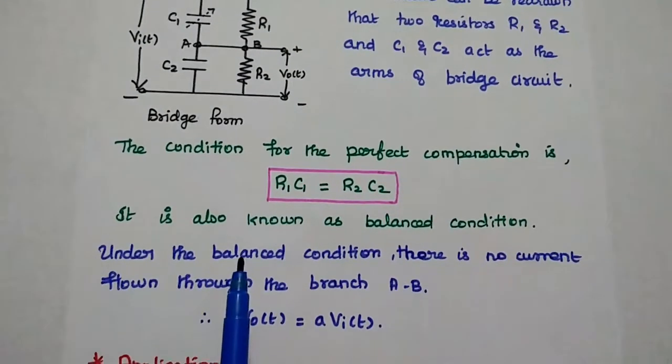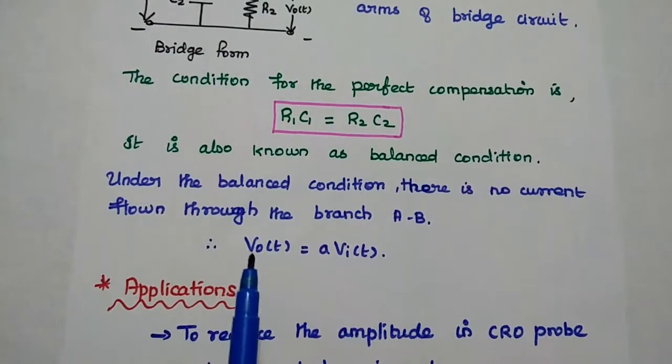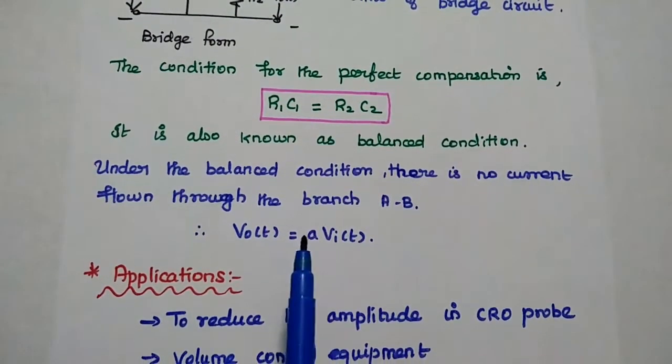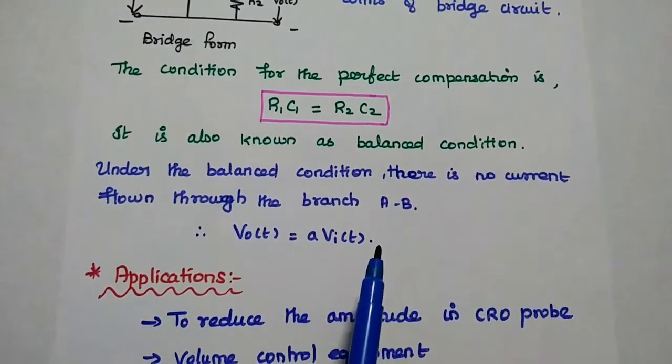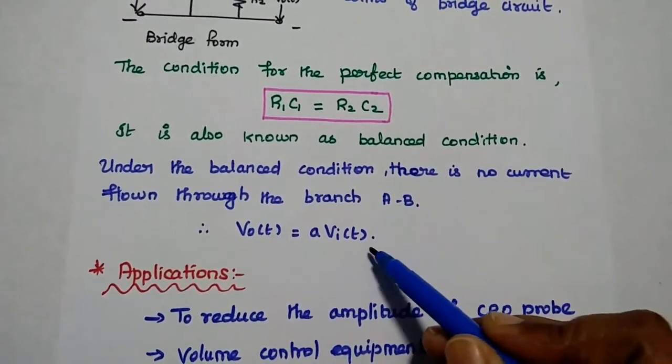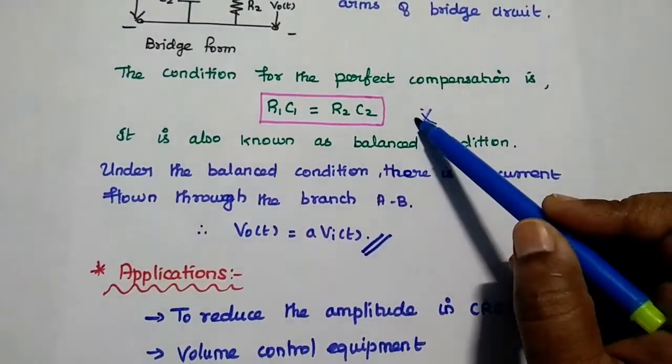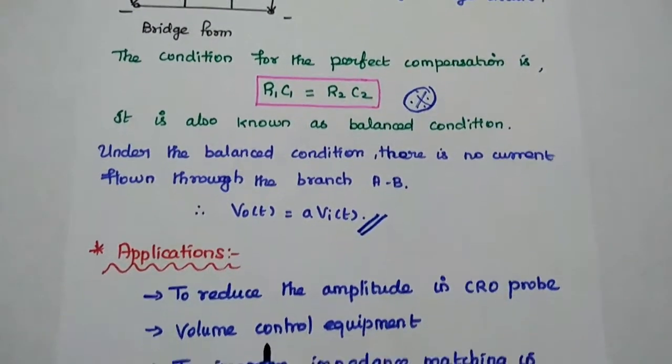Then we can achieve the compensation for that stray capacitance. Under balanced condition there is no current flow through the branch. Then we can get Vo(t) equals A into Vi(t), which is the attenuator output without any distortion. The condition is R1 C1 equals R2 C2.